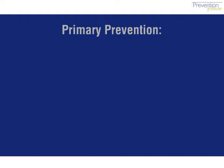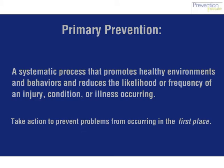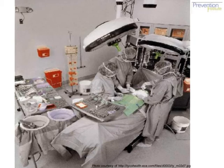But what is meant by the term prevention? We define primary prevention as a systematic process that promotes healthy environments and behaviors. Primary prevention reduces the likelihood or frequency of an injury, condition, or illness. Primary prevention means taking action to prevent problems from occurring in the first place.